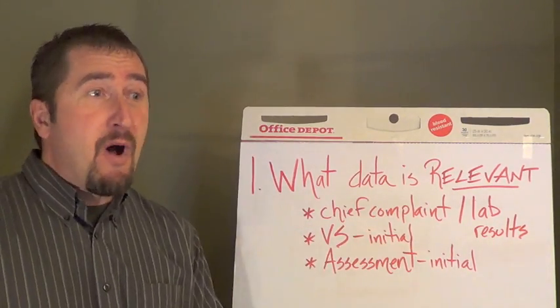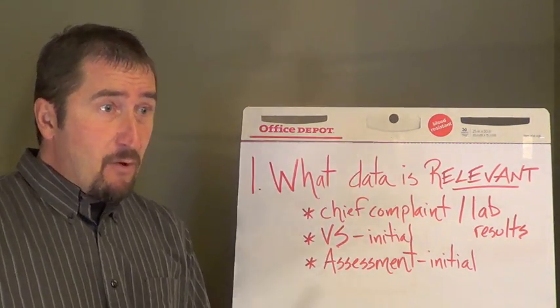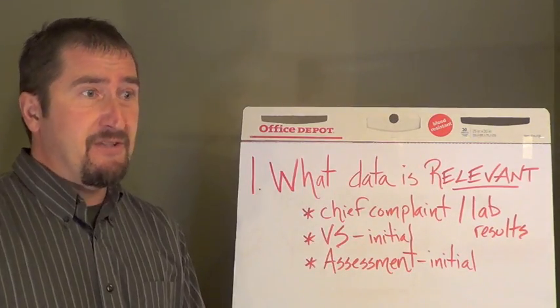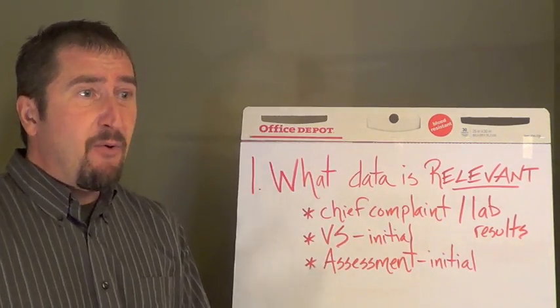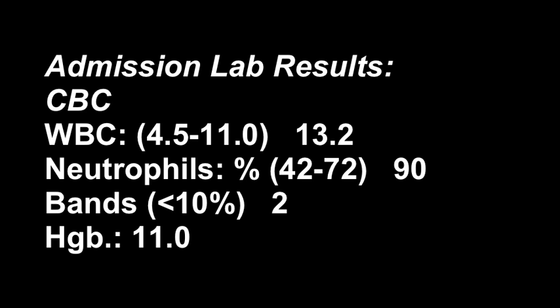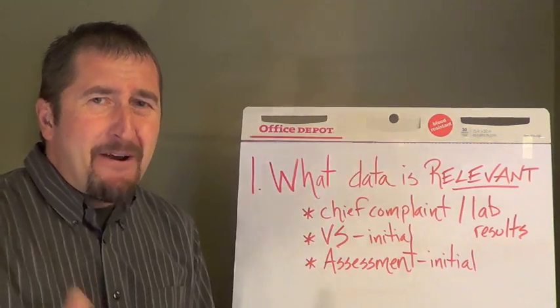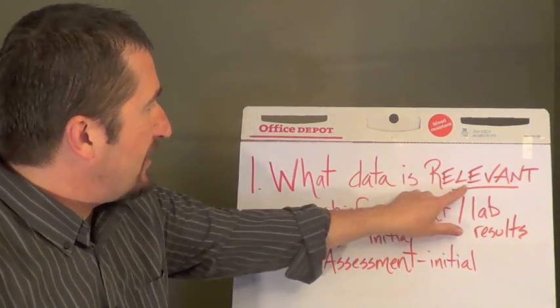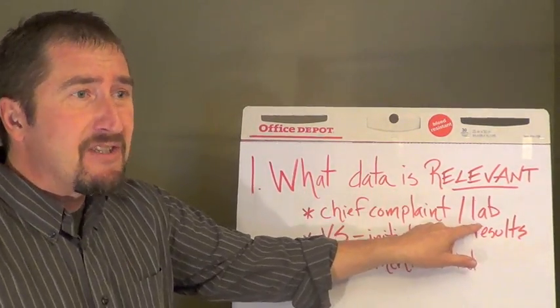Now let's go to our admission labs. The doctor orders some basic tests. He orders a white blood cell test. It's 13.2. The neutrophils are 90%, the bands are 2, hemoglobin is 11. Is there anything there that you're concerned about? Looking at what is relevant in our lab results.